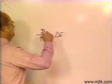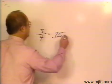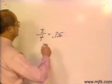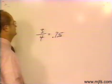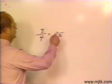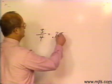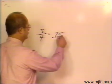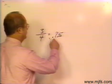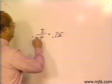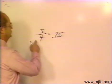The place value on decimal numbers is as follows: the first position is tenths, the next one is hundredths. That would mean I would have 75 hundredths for an equivalent decimal value of 3 fourths.